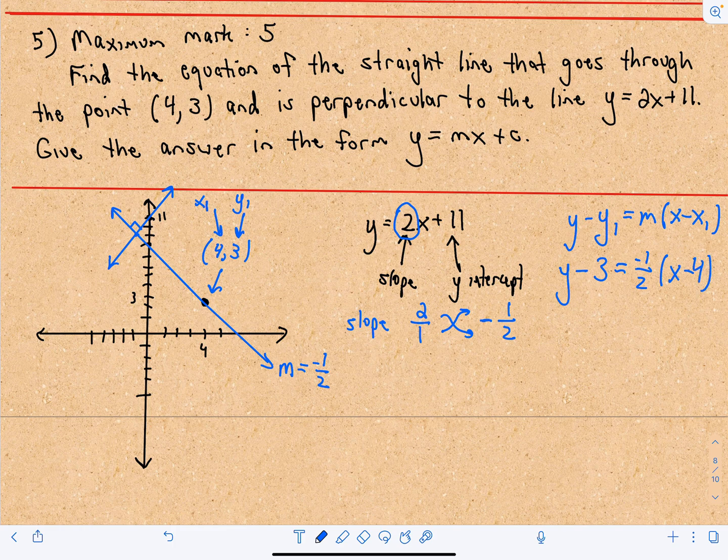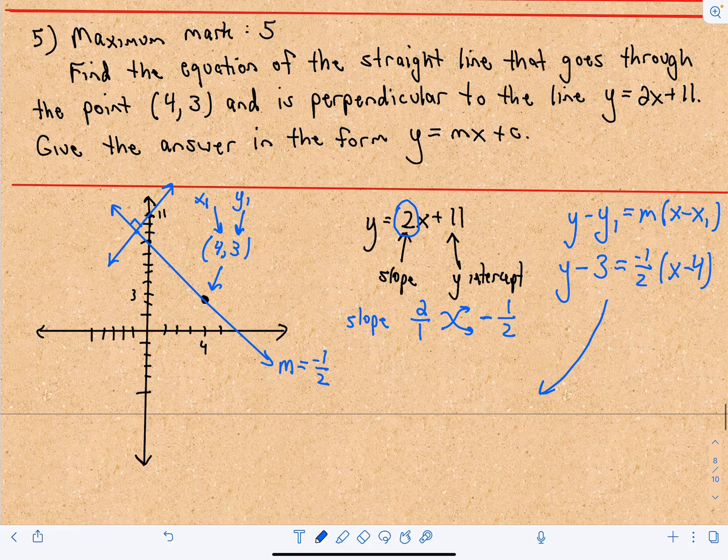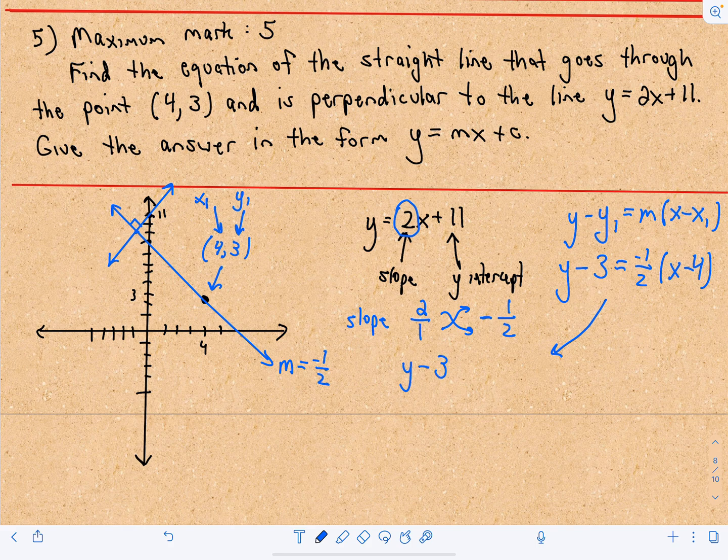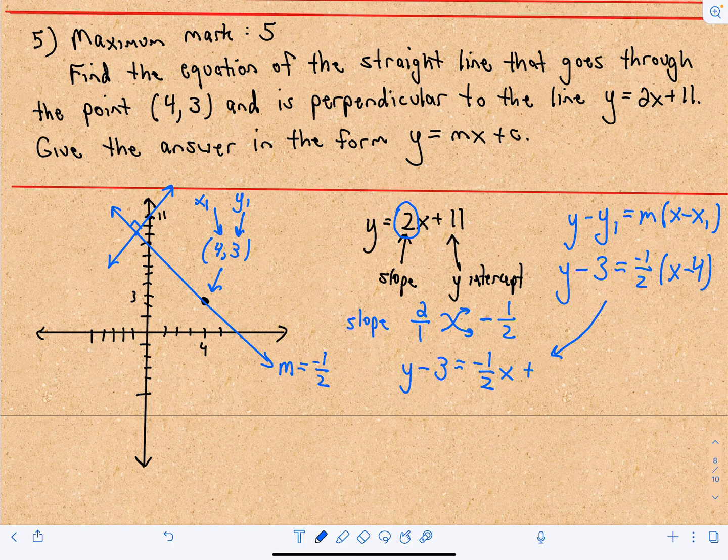So now it's simply a matter of just expanding this out and simplifying. So I'm going to pull this down here just to give myself a little extra space. Let me put it over here. So I would have y minus 3. Now if I distribute, we'll have negative 1 half x. Negative 1 half multiplied by negative 4. Well, a negative and a negative is going to be a positive. And then it's the same thing as having 4 divided by 2, which is going to be 2.